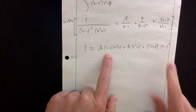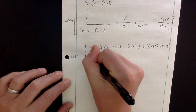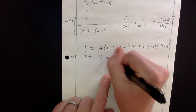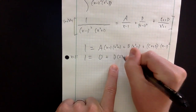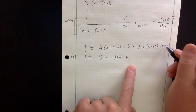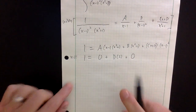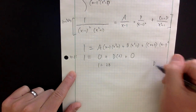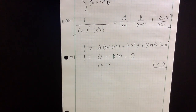I'll start with x equals 1, because that will clear out two of these terms completely. So 1 equals B times (1 squared plus 1), which is 2. The other terms vanish, giving 1 equals 2B, so B equals one half.